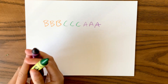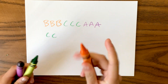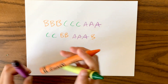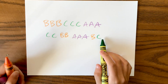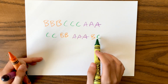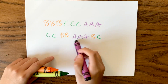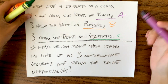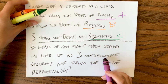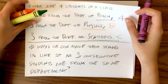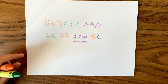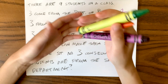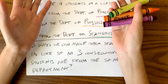We do not want something like that. We also don't want something like two stats students and two physics students, then all of the psychology students, and then the last physics and stats students — because even though the physics and stats students are separated, we still have all the psychology students standing next to each other. Going back to our problem statement: how many ways can we make them stand in a line without three consecutive students from the same department? A concept we can use here is the inclusion-exclusion principle.